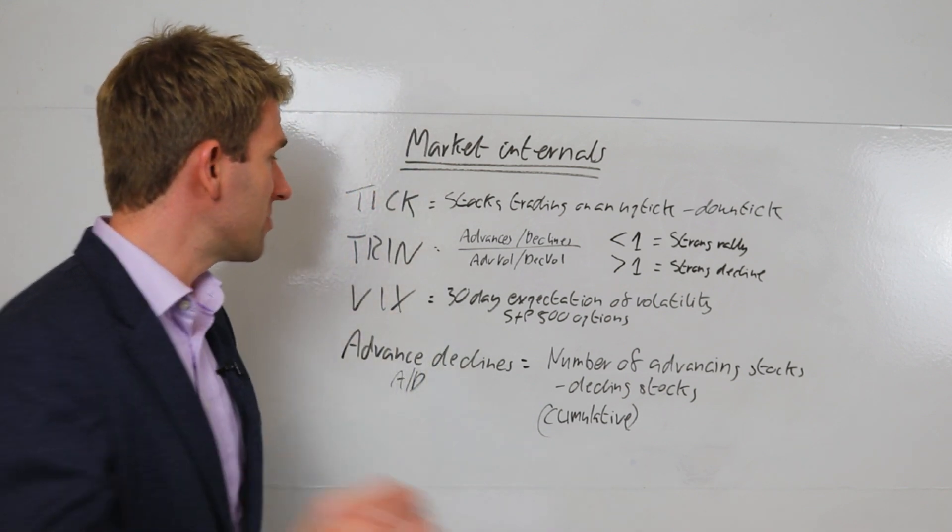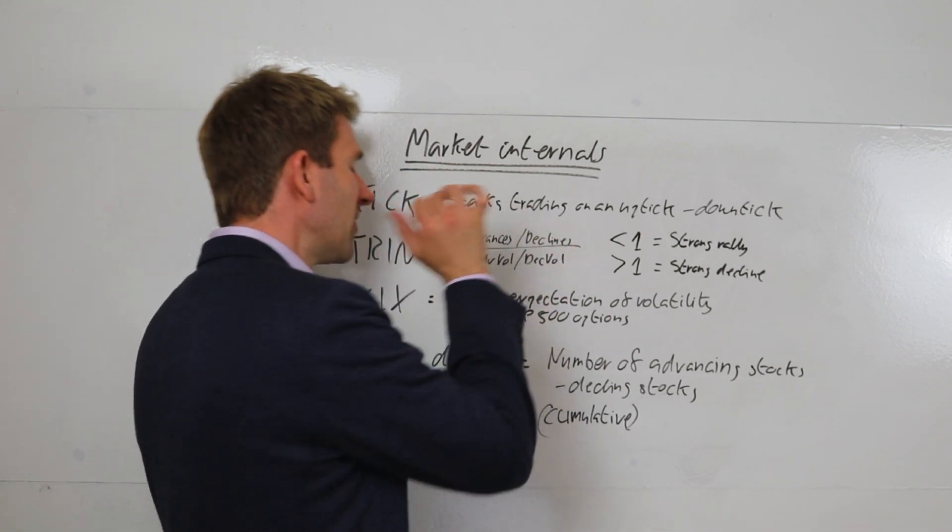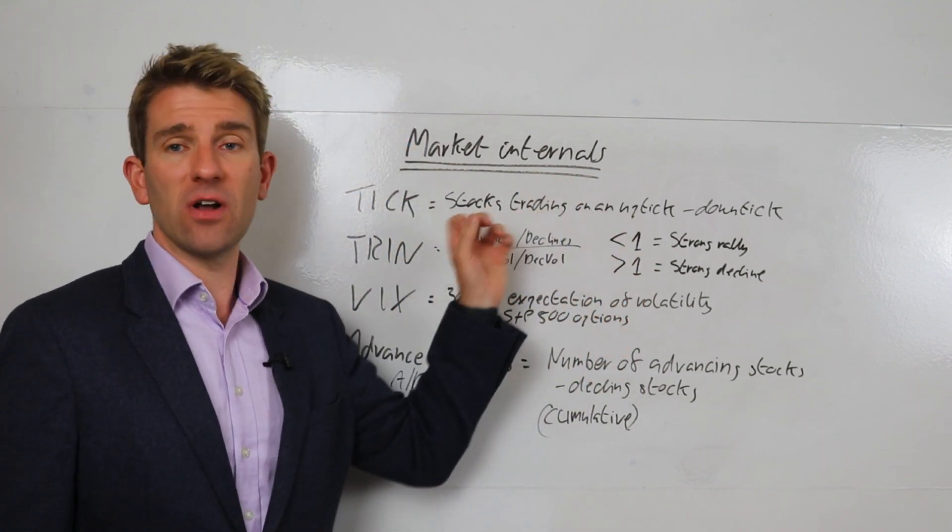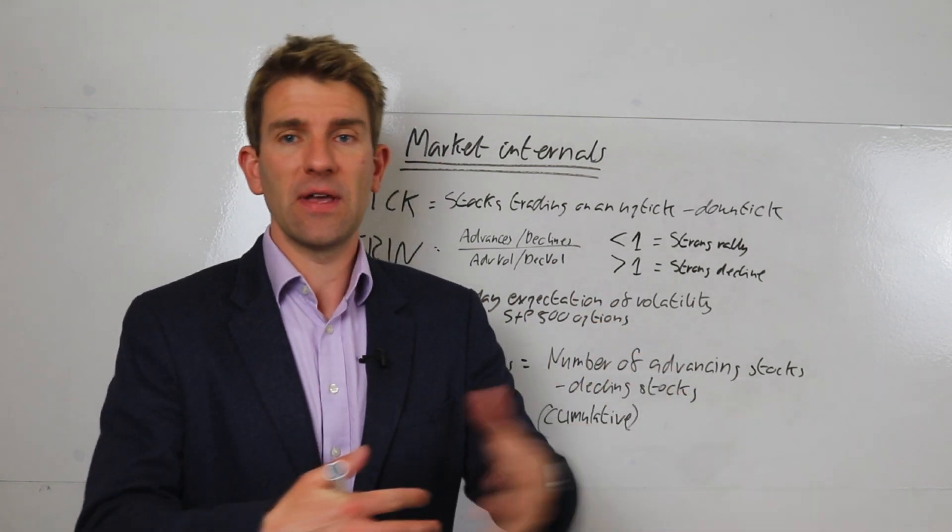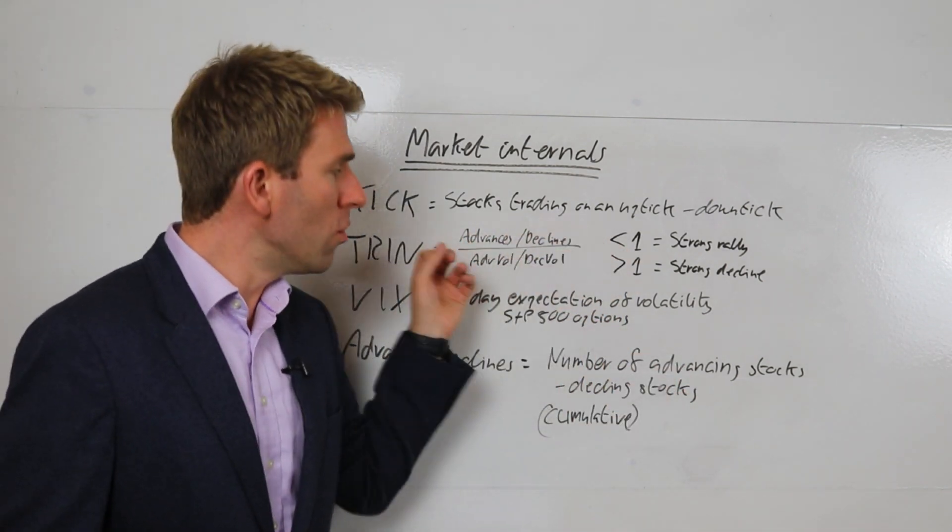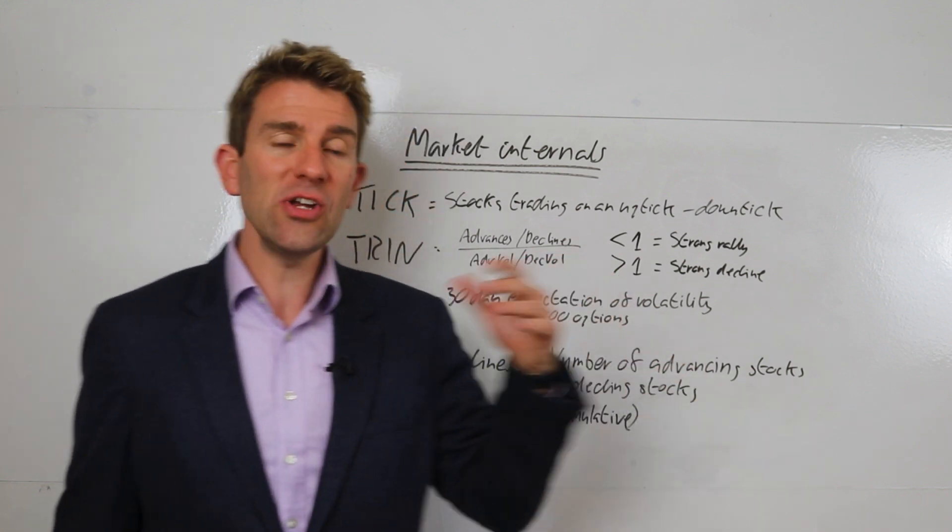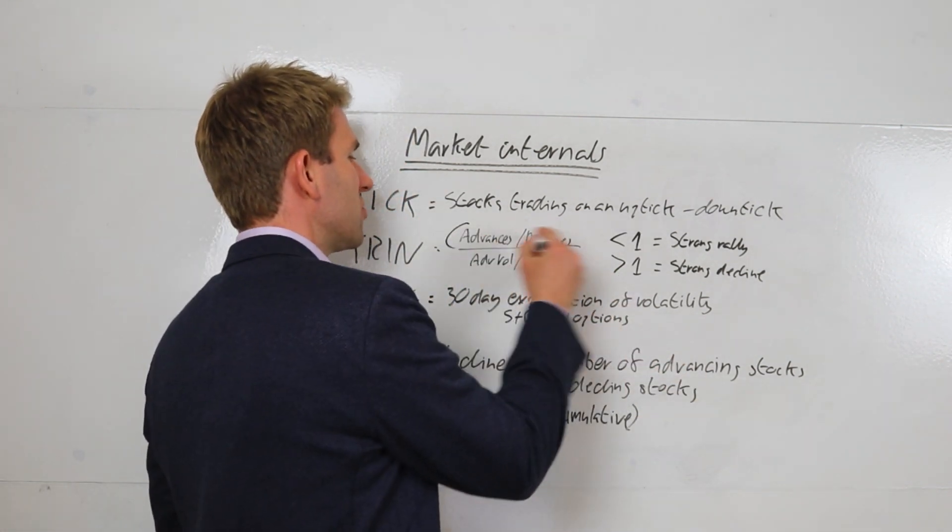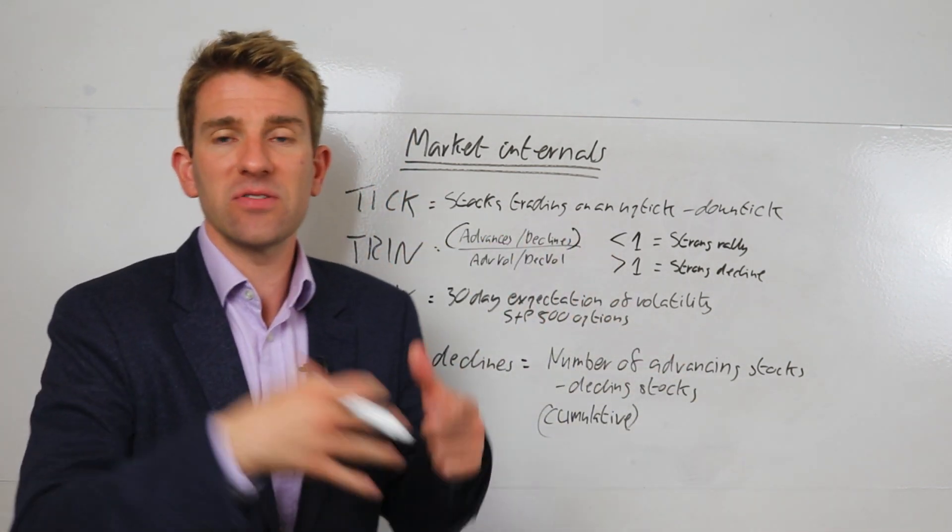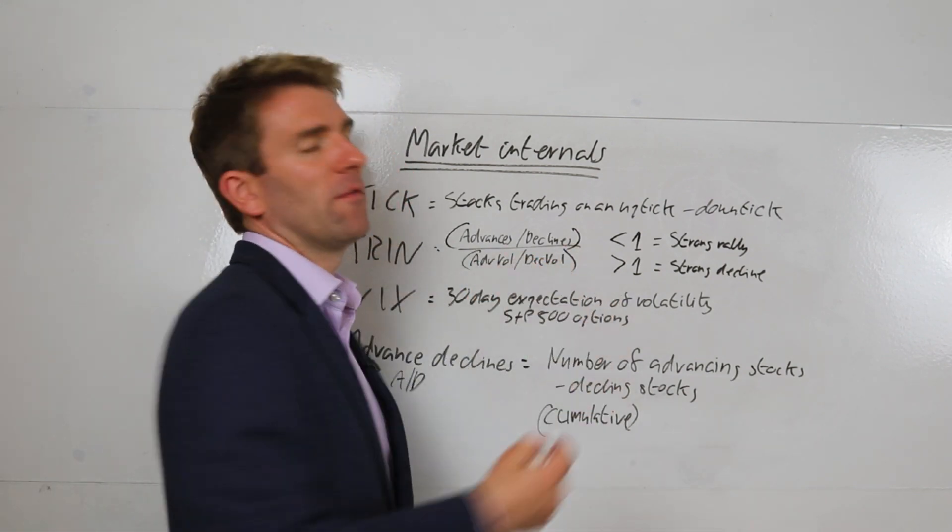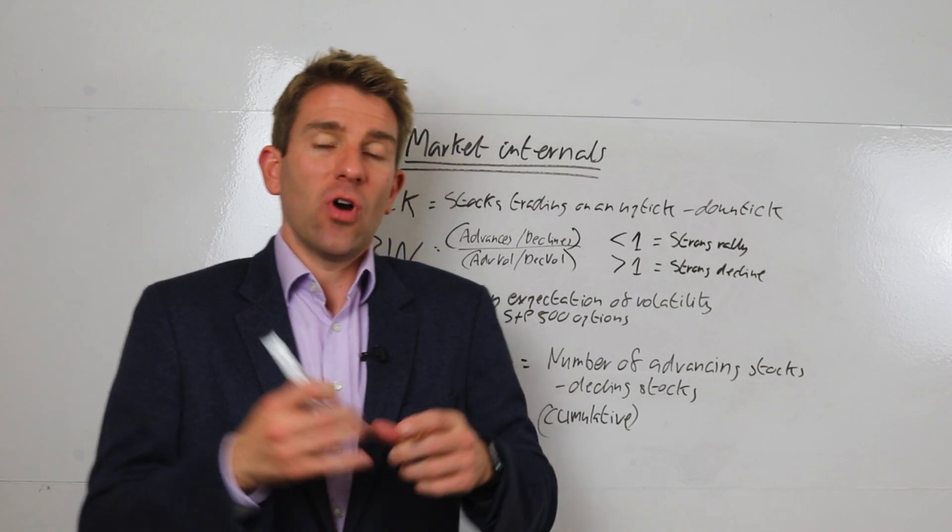So TRIN is basically the number of advances divided by the number of declines - so the ratio of the advances and declines, the number of stocks that are up on the day and down on the day - all over or divided by advancing volume and declining volume. So the ratio, the real way of looking at it, is the ratio of the number of advances divided by declines and the ratio of the volume of the two. So you've got something different to the advance-declines as we'll look at in a moment.